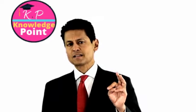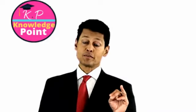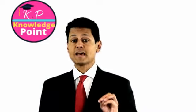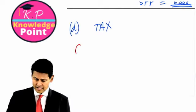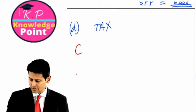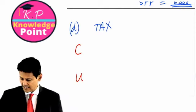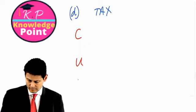They stand for C, U, D, corporation tax, under or over provision for previous year's tax, and D for deferred tax. So allow me to put those, that little mnemonic down, C, leave a line, U, leave a line, D, CUD.